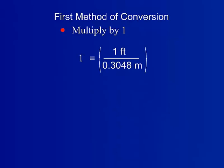The first conversion method is to multiply by 1, also known as the conversion factor method. The exact conversion is turned into a fraction equal to 1, which is called a conversion factor, in which the desired units are in the numerator of the fraction.